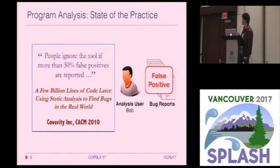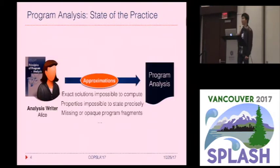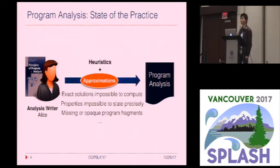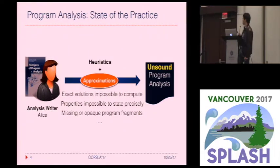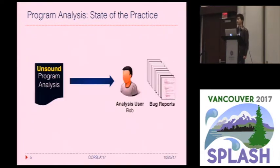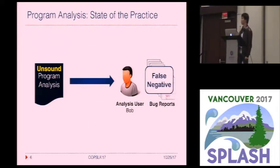To counter this issue, writers like Alice in practice also apply various heuristics to suppress such false alarms. While these heuristics can be very effective in reducing false positives, they also render the analysis unsound. And these unsound analyses result in false negatives on Bob's program, which are also very undesirable.